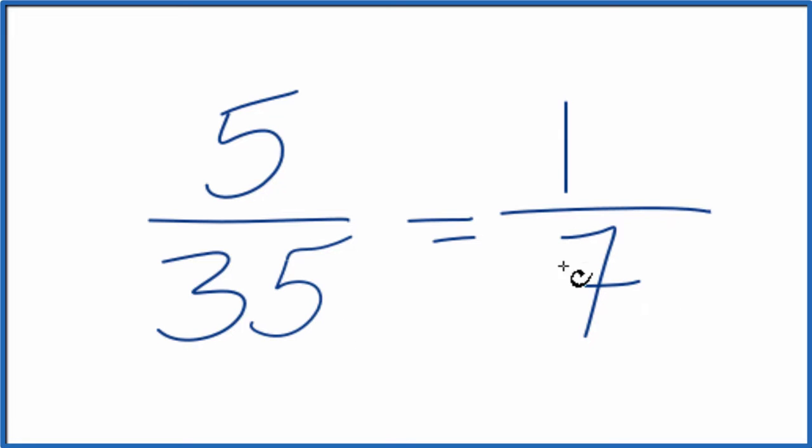These fractions, they're equal. They have the same value. If you divided 5 by 35 or 1 by 7, you'd get the same number. They're equivalent fractions. It's just that we've simplified 5/35 down to 1/7.